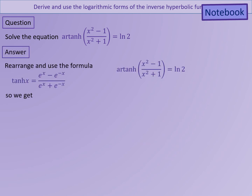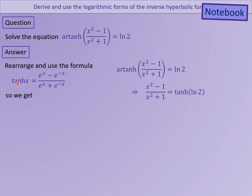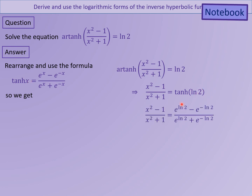Now we're going to solve the same equation but in a different way. We're going to start this time by taking tanh of both sides. The left-hand side just becomes x squared minus 1 over x squared plus 1. The right-hand side is now tanh of ln 2. We're going to use the formula that tanh of x is e to the x minus e to the minus x over e to the x plus e to the minus x, and replace x in this expression with ln 2. This leads us to the right-hand side being e to the power ln 2 minus e to the power minus ln 2, over e to the power ln 2 plus e to the power minus ln 2. We're going to need to use the laws of logarithms to simplify this.